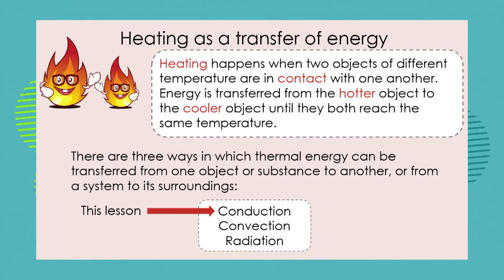Revising from what we have been learning about: heating happens when two objects — a hotter object and a cooler object — are in contact with each other, and the heat energy is transferred from the hotter to the cooler object until they are equal in temperature. That's what we discovered last time.